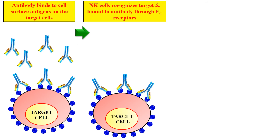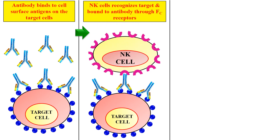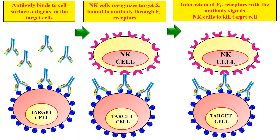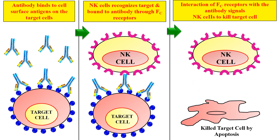As you can see, the antibody is bound to the surface antigen on the target cell. The surface receptors of the natural killer cell recognize this antibody, and the natural killer cell binds to it. After binding, the interaction between the natural killer cell receptors and the antibody triggers signal transduction, which signals the natural killer cell to kill the target cell. The natural killer cell then ultimately kills the target cell by apoptosis.